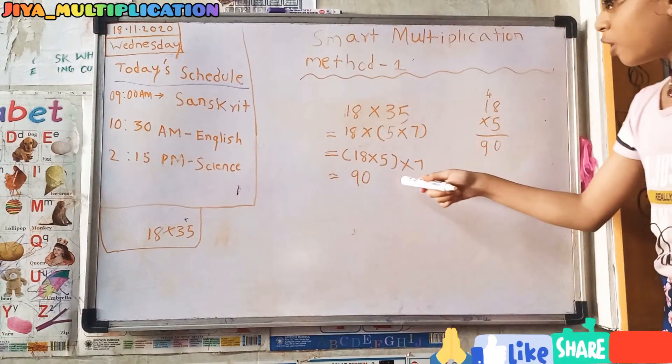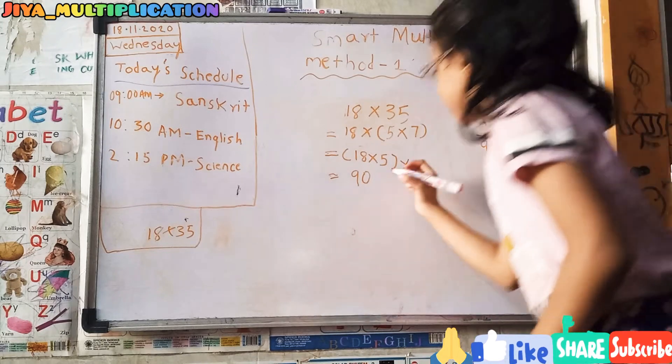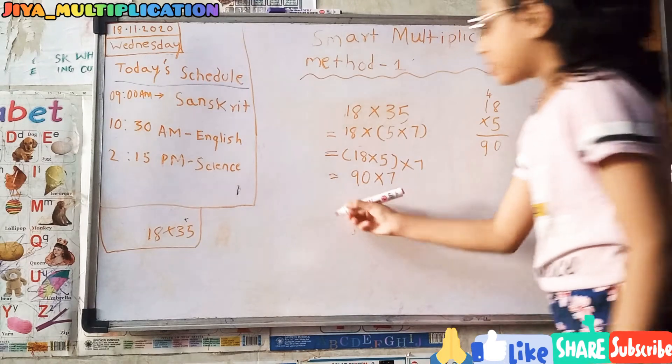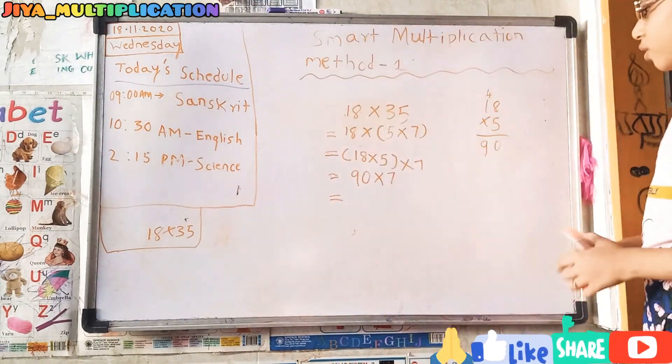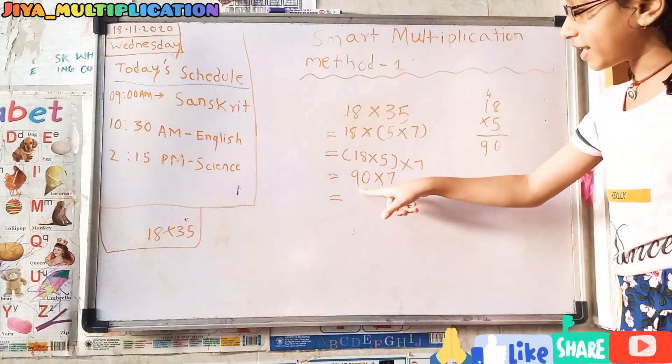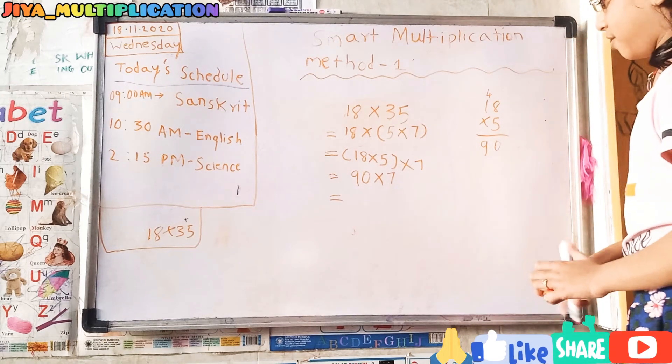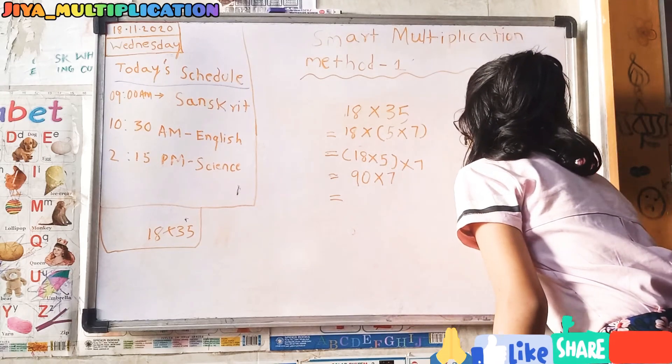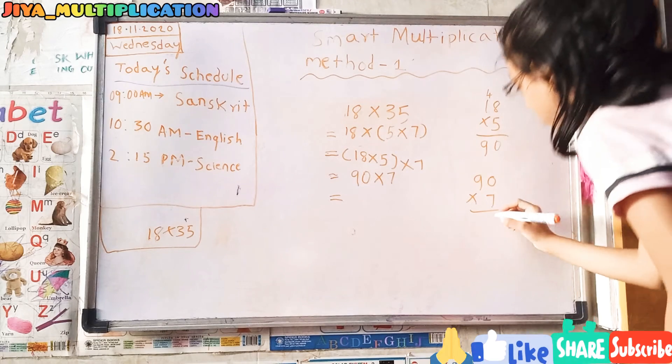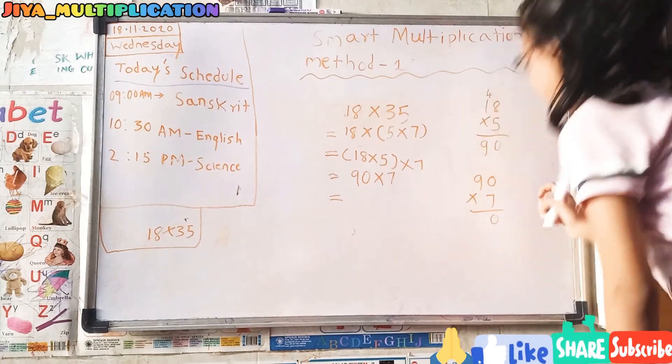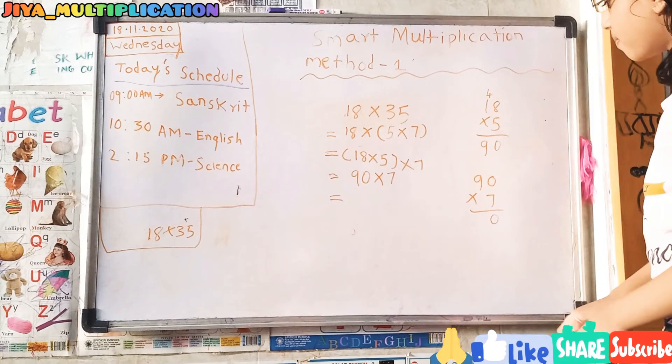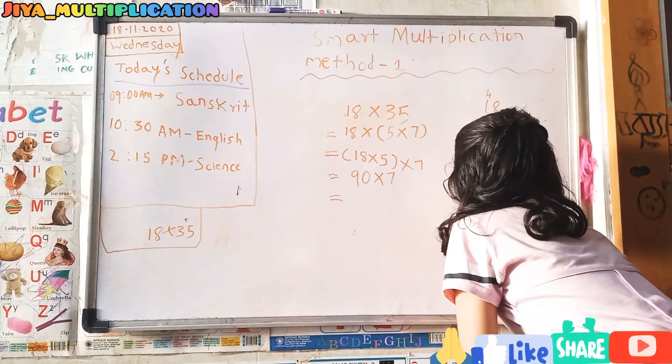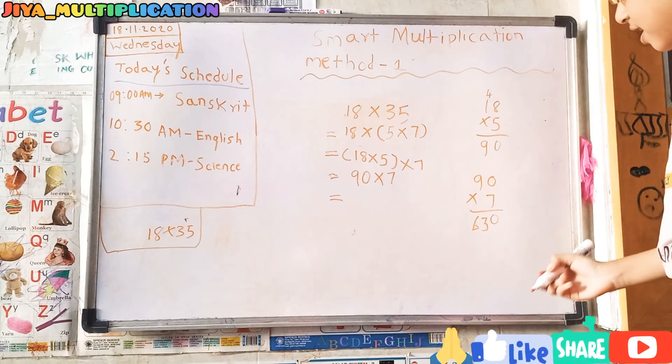We should give the last number 7, so 90 into 7. We should give again equals and multiply 90 into 7. 7 zeros are 0 and 7 nines are 63. The answer is 630.